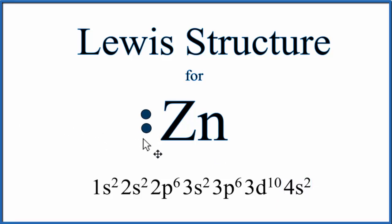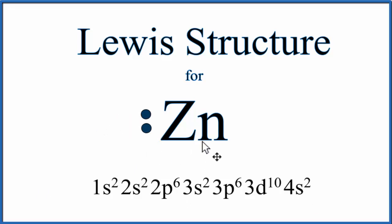These two electrons are placed together because they're together in the s² orbital. When zinc forms chemical bonds, it will lose these two electrons to another atom or atoms, leaving it with a 2+ charge. This is Dr. B with the Lewis structure for Zn, zinc — thanks for watching.